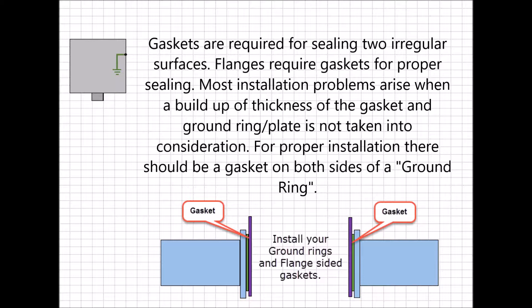Gaskets are required for sealing two irregular surfaces. For proper installation there should be a gasket on both sides of a ground ring. You do not have to remove a protection plate to install a gasket between it and the meter flange. The gasket is provided by the customer and is selected for compatibility with the process.